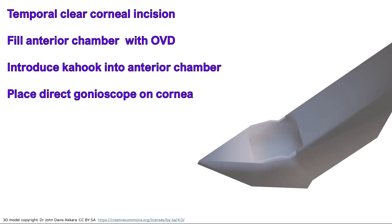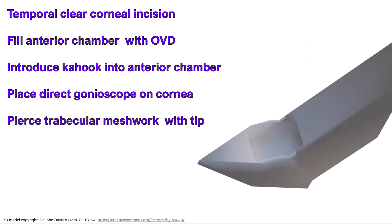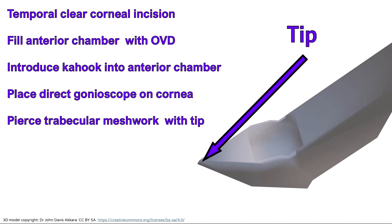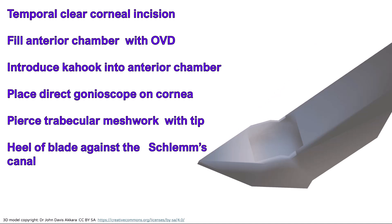Under direct gonioscopic visualisation, the tip is used to pierce the trabecular meshwork and the heel of the instrument is placed in Schlemm's canal against its wall. The blade is then advanced in either a clockwise or counterclockwise direction for about 3 to 5 clock hours.